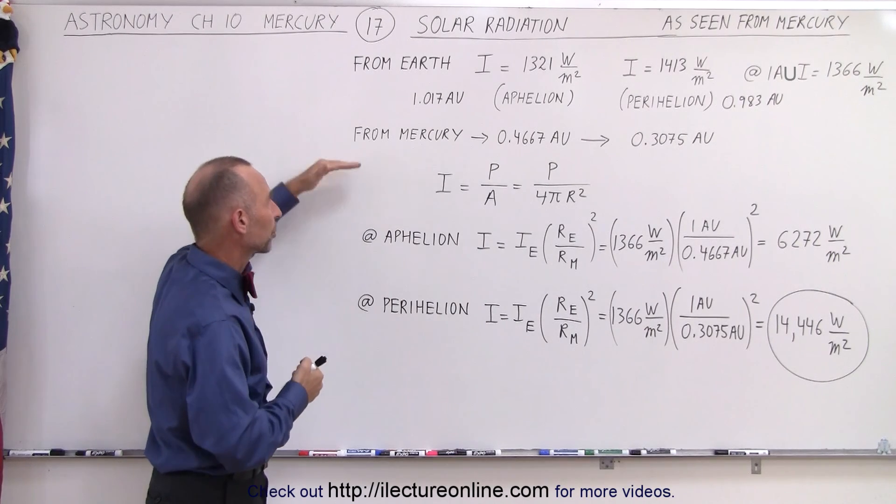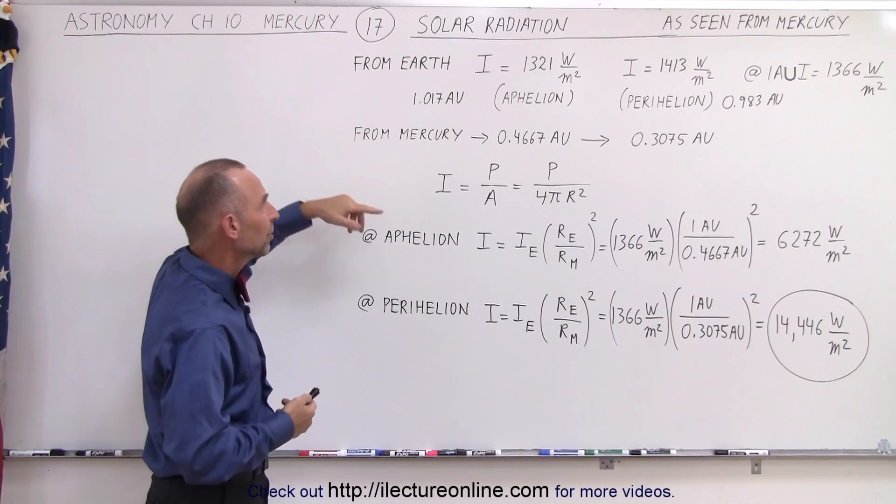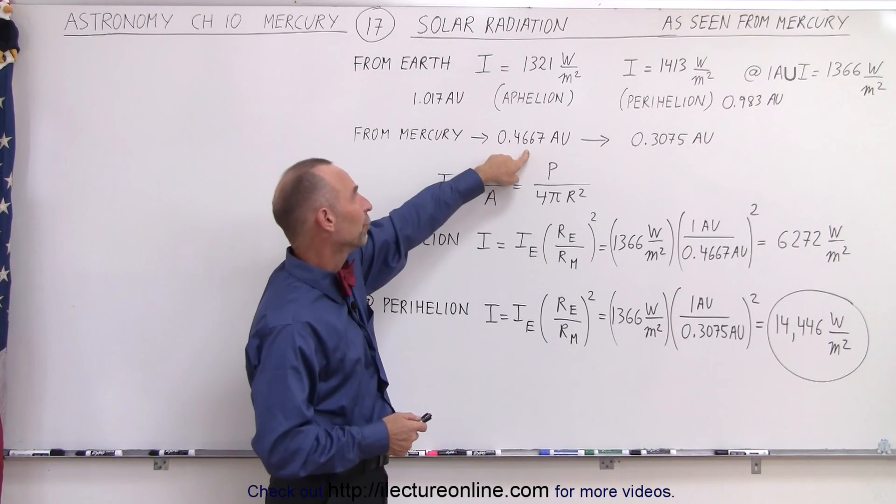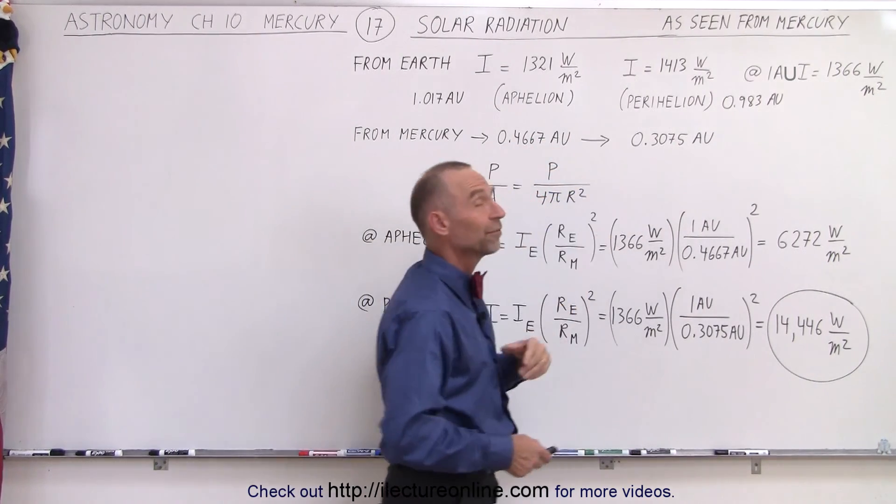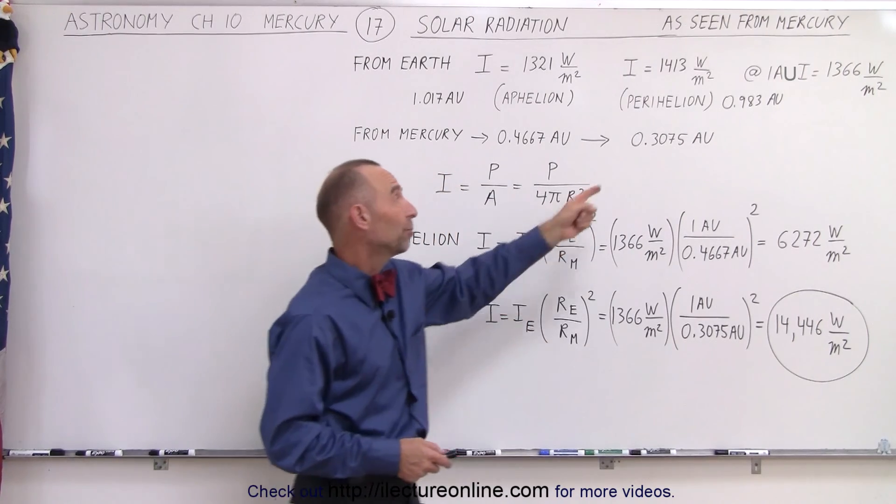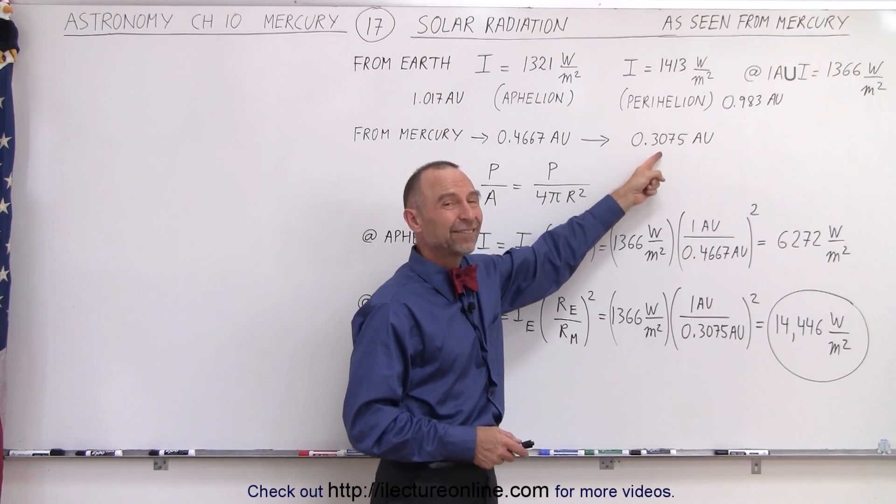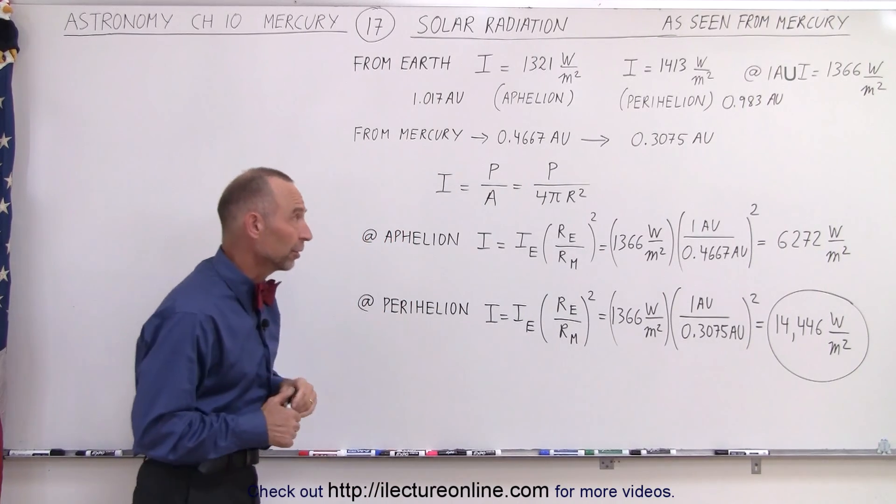Now let's go to Mercury. For Mercury the distance to the sun varies between 0.4667 astronomical units and 0.3075 astronomical units. At this point Mercury is less than one-third the average distance between the sun and Earth.